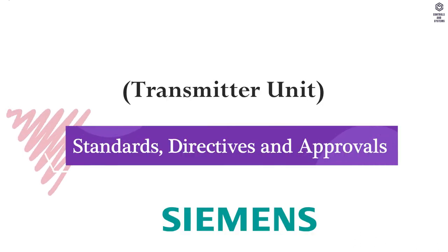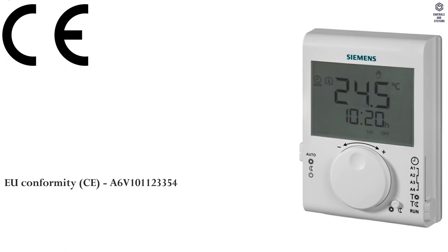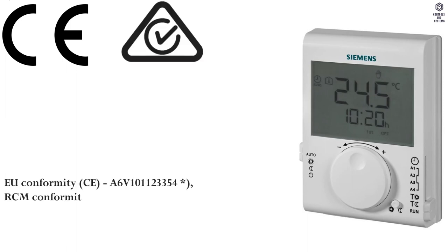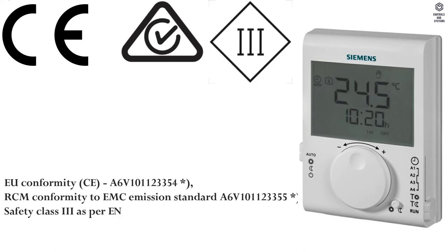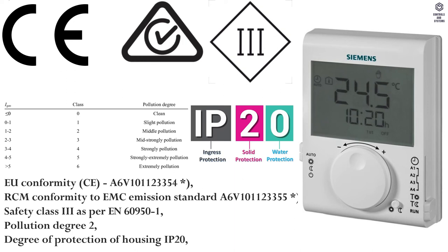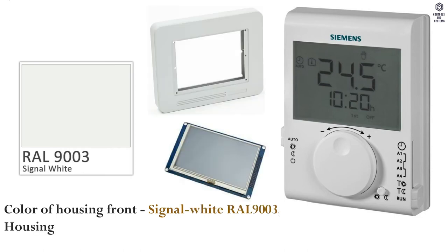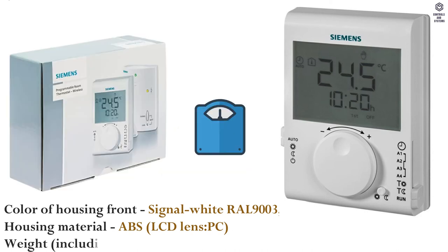Standards, directives and approvals: EU conformity CE; RCM conformity to EMC emission standard. Safety class is 3, pollution degree is 2, degree of protection of housing is IP20. Color of housing front is signal white RAL 9003. Housing material is ABS; LCD lens is PC.